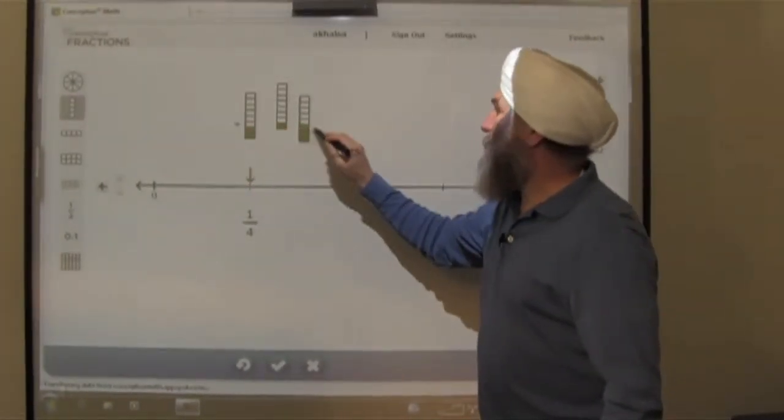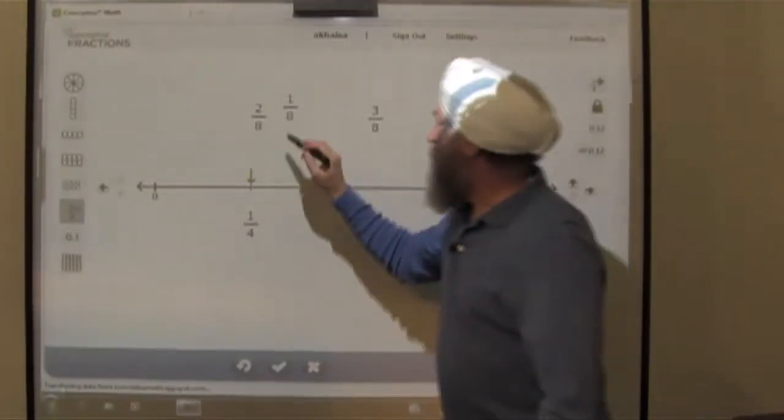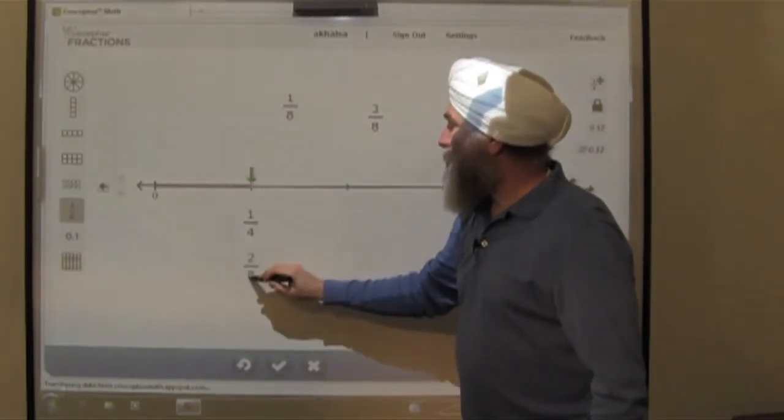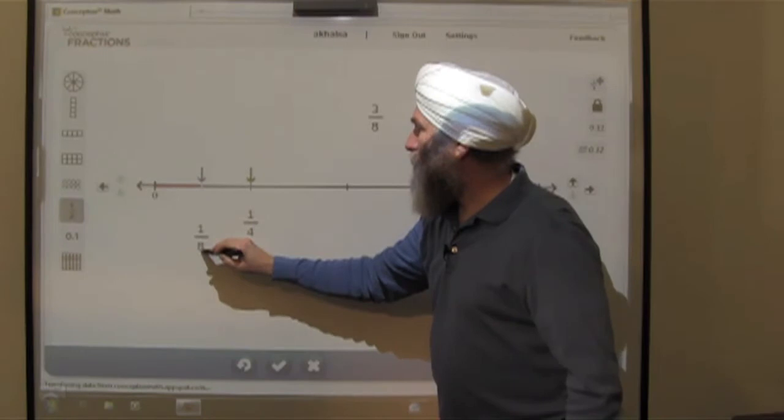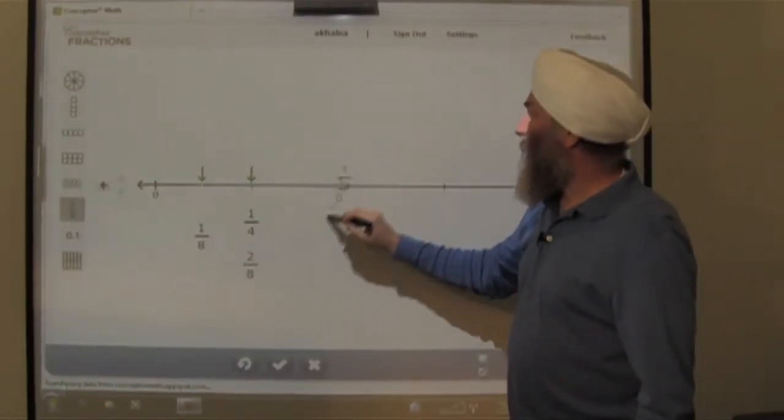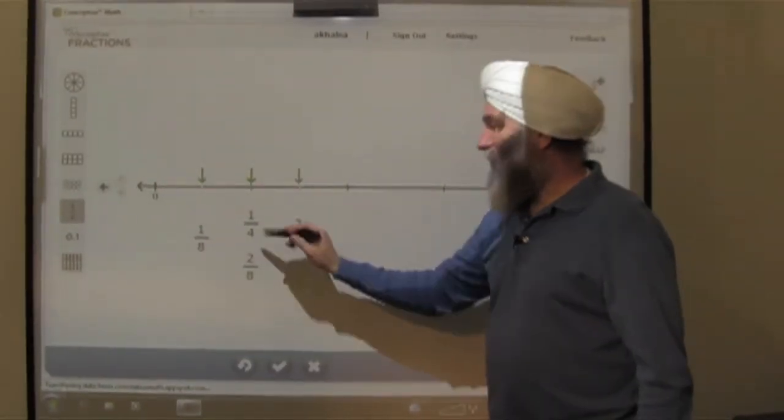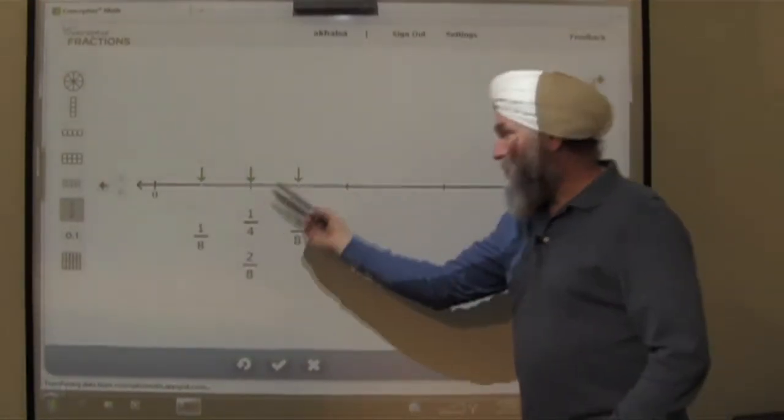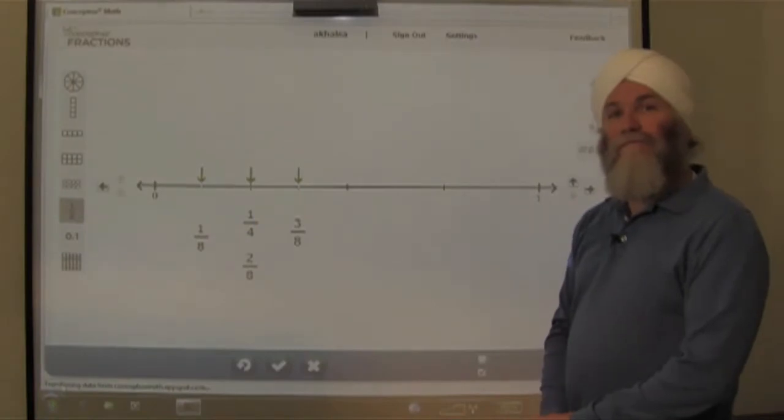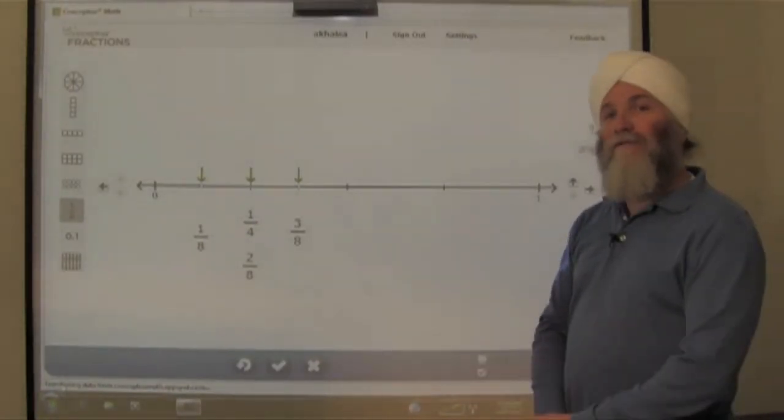So we're going to put them back on the number line. The 2 eighths was here, and the 1 eighth was here. And then the 3 eighths, well, that's the same as 1 eighth plus 2 eighths. And that's why it fits right here. You take the 2 eighths and you add one more. That's how we place these fractions on the number line.